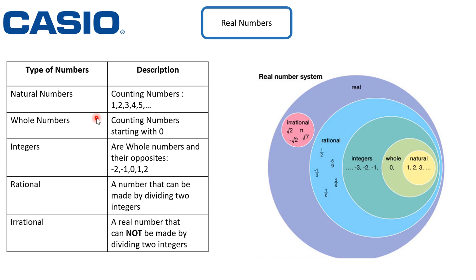Integers are whole numbers and their opposites. For example: negative three, negative two, negative one, zero, one, two, and three.